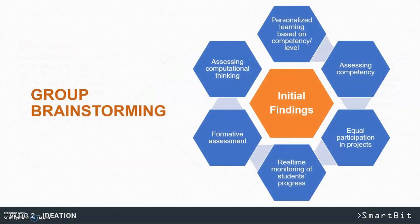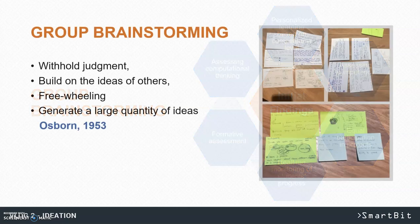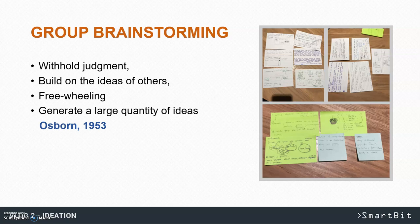As we didn't have much exposure to computing because of our background, a good starting point was the initial findings from our user research. We took the key findings and each of us generated 3 to 5 solutions to each problem. While doing this we tried our best to adhere to Osborne's rules for brainstorming, which are: withholding judgement, building on the ideas of others, generating a large quantity of ideas, and freewheeling.